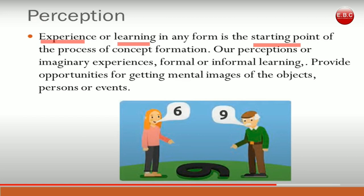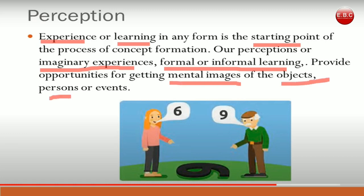Our perceptions, imaginary experiences, and formal or informal learning provide opportunities for getting mental images of objects, persons, or events. These experiences — whether at home, school, or any public place — provide the opportunity from which we get mental images about any object or person.